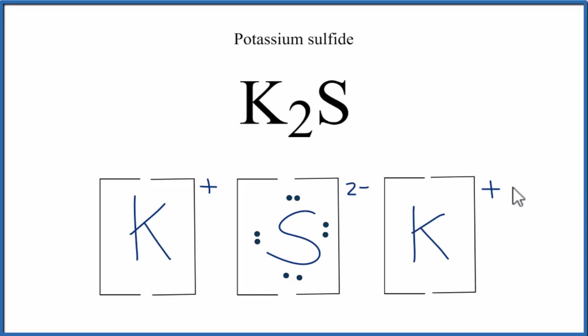What we've drawn here is called a formula unit. K2S is a crystal, and it's actually made up of a bunch of these formula units in a repeating pattern.